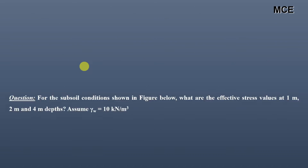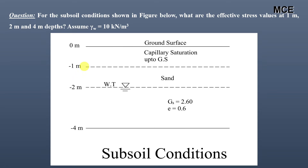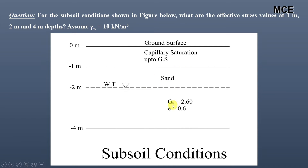Welcome back to Master Civil Engineering. In this video we will learn how to find the stress distribution in a soil having capillary rise. The given question states: for the subsoil conditions shown in the figure, find the effective stress values at 1 meter, 2 meter, and 4 meter depths. Assume the unit weight of water is 10 kN/m³. The water table is at a depth of 2 meters from the ground surface, and from the water table up to the ground surface there is capillary saturation. This is a sandy soil with a specific gravity of 2.60 and void ratio of 0.6.